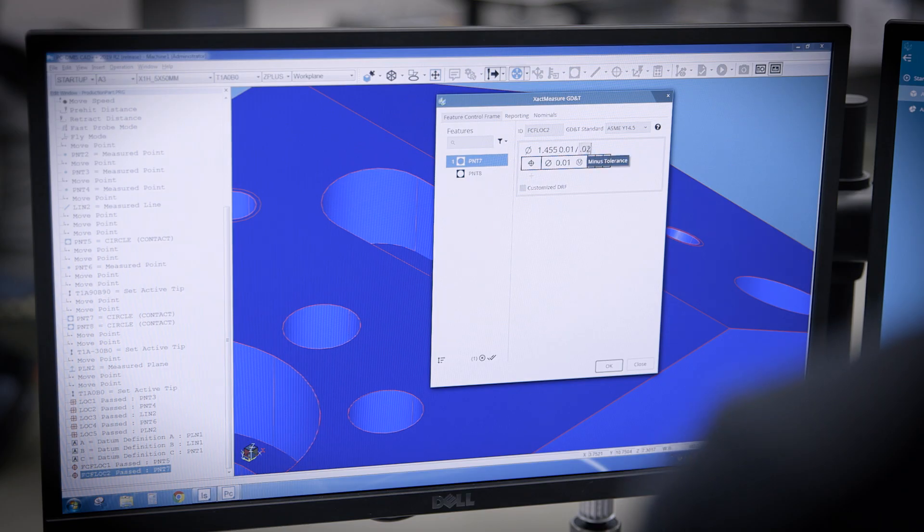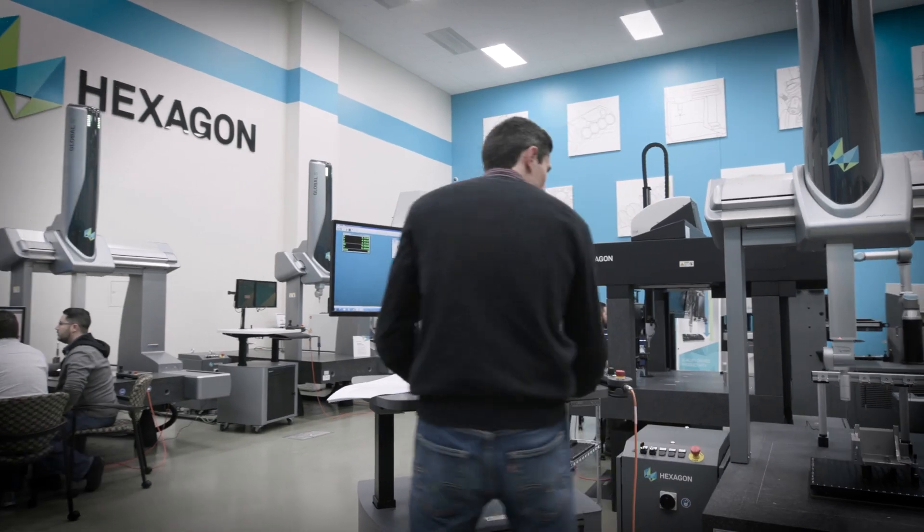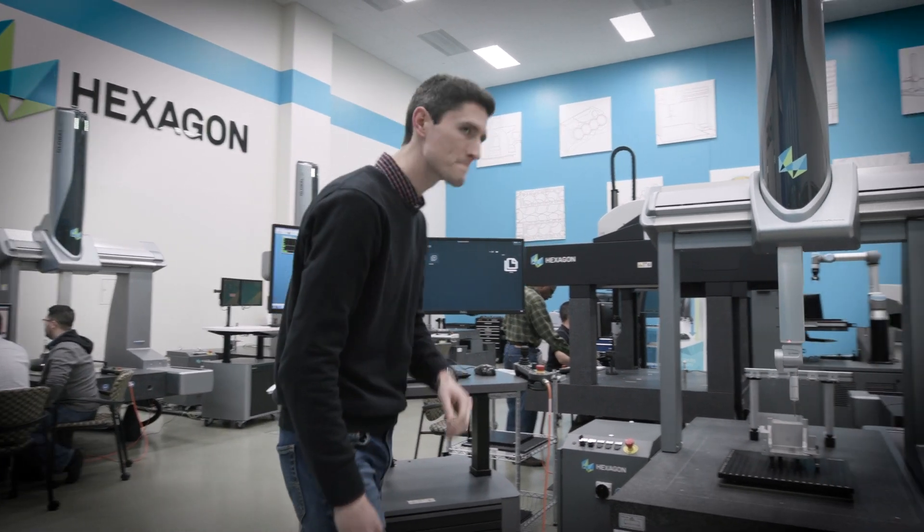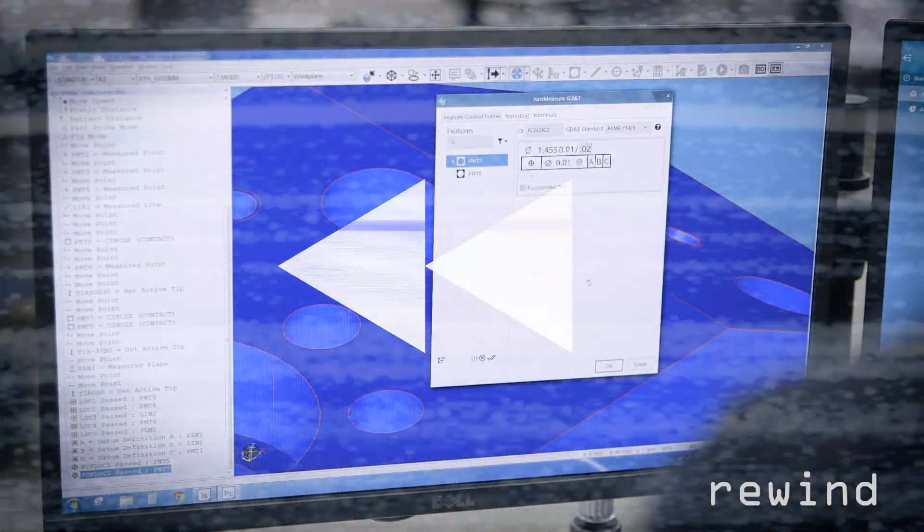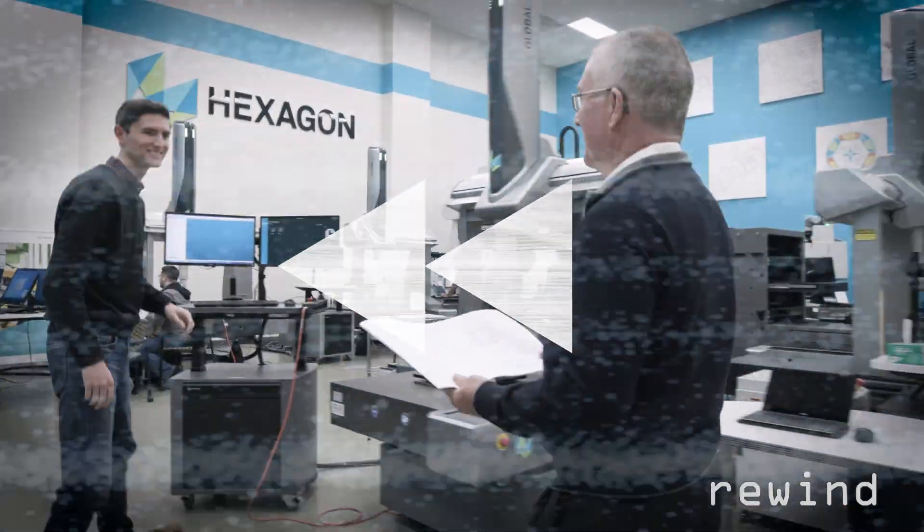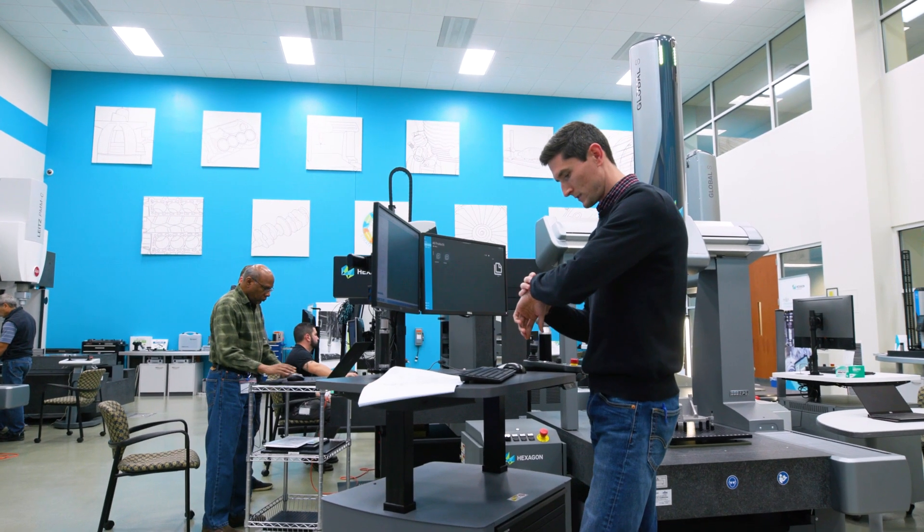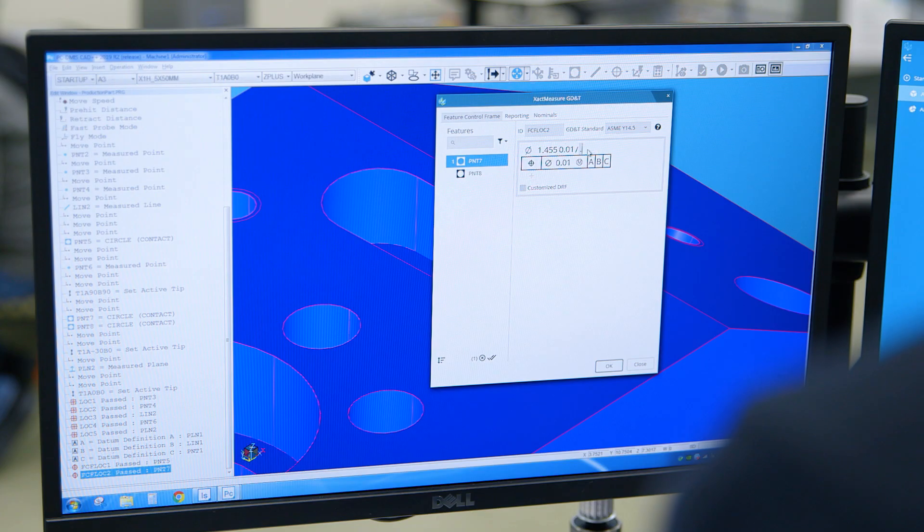Incorrectly inputting one of the new parameters before sending it off to production—a simple mistake that caused a costly production shutdown. Now let's replay this scenario using PC-DMIS Protect. The quality engineer once again inputs the tighter tolerances.